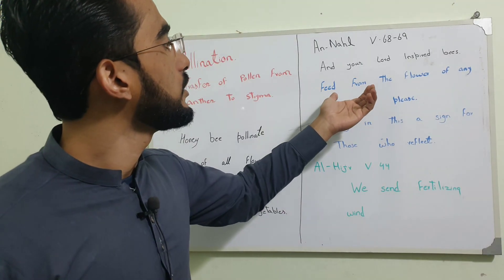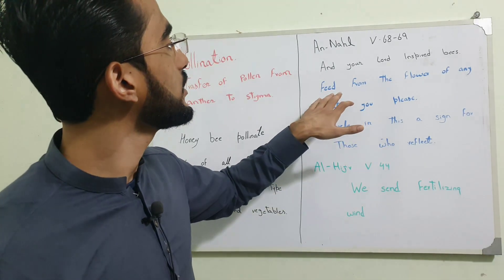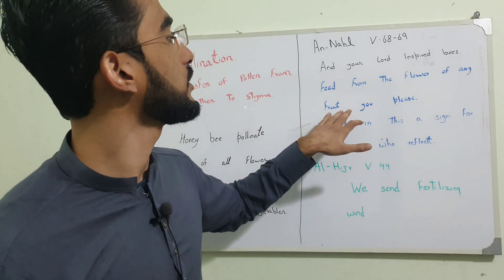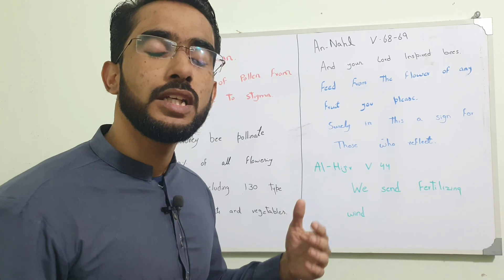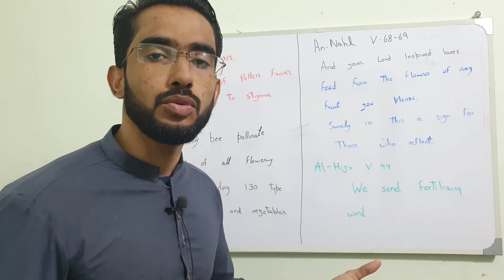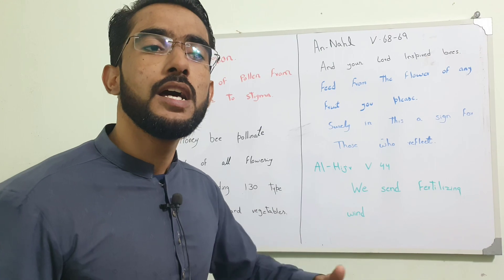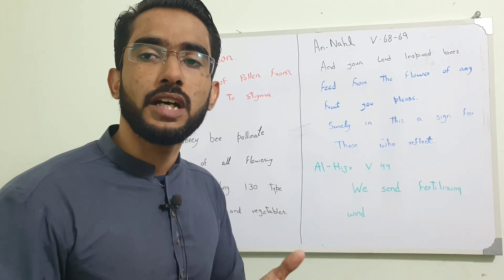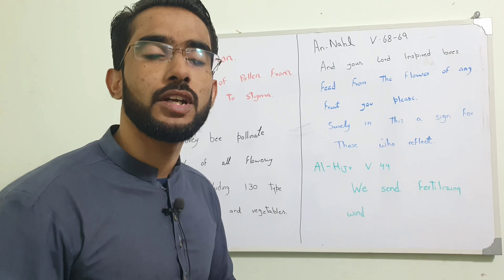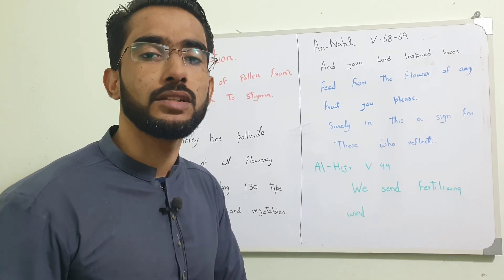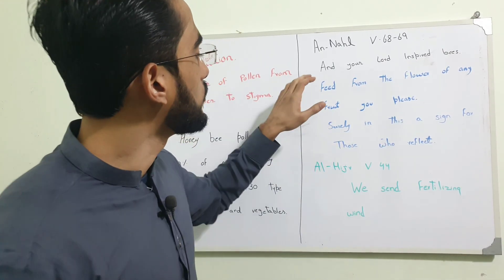Why did Allah not mention any other insect or organism? Why did Allah specifically talk about honey bees? Because He knows — He created the universe. He knows what insects are responsible for the transfer of pollen grain from anther to stigma.